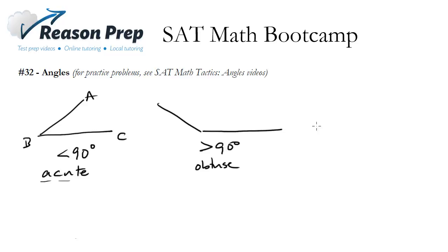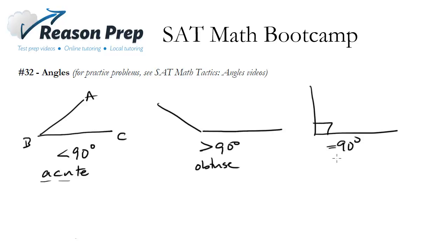And finally we've got a 90 degree angle, also known as a right angle. If it equals 90 degrees you'll see this little square symbol, and this is a right angle.